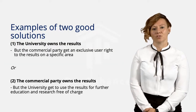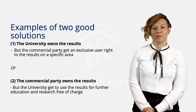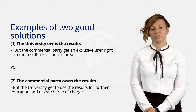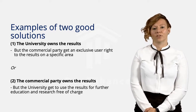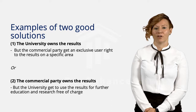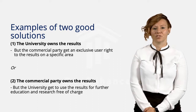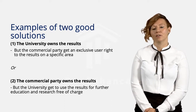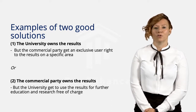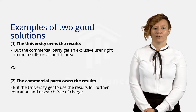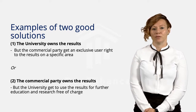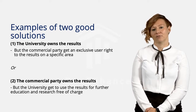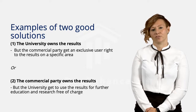Some examples of clear and unambiguous solutions are to either let the university own the results but let the commercial party have an exclusive user right to the results in a specific area, or let the commercial party own the results but keep user rights for the results for further education and research for the university.